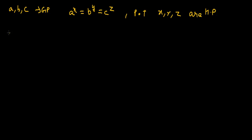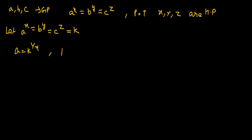Let a to the power x equals b to the power y equals c to the power z equals k. Then a equals k to the power 1/x, b equals k to the power 1/y, and c equals k to the power 1/z.